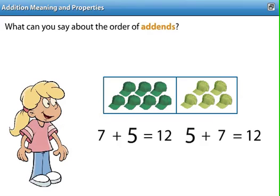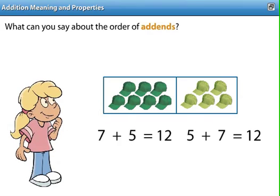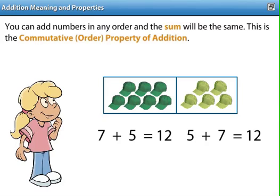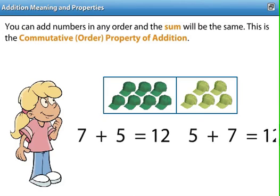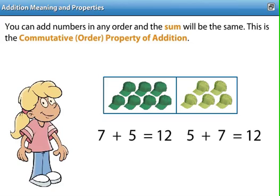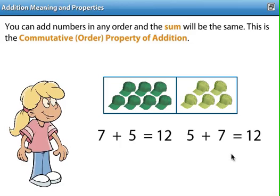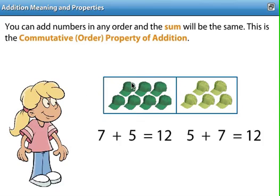What can you say about the order of addends? It doesn't matter if you start by taking your five and then put seven more on, or if you start with your seven and then put five more on. Either way, you still have the same number of hats — there are still twelve hats. The commutative property of addition is when it doesn't matter whether you add the first number and then the second, or the second and the first.